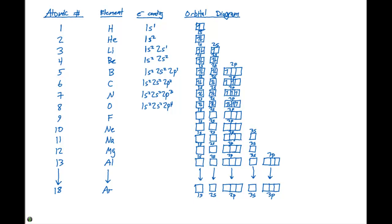For fluorine, our electron configuration has to contain nine electrons, so it's going to be 1s2, 2s2, 2p5. We place all nine electrons in the orbital diagram for fluorine.